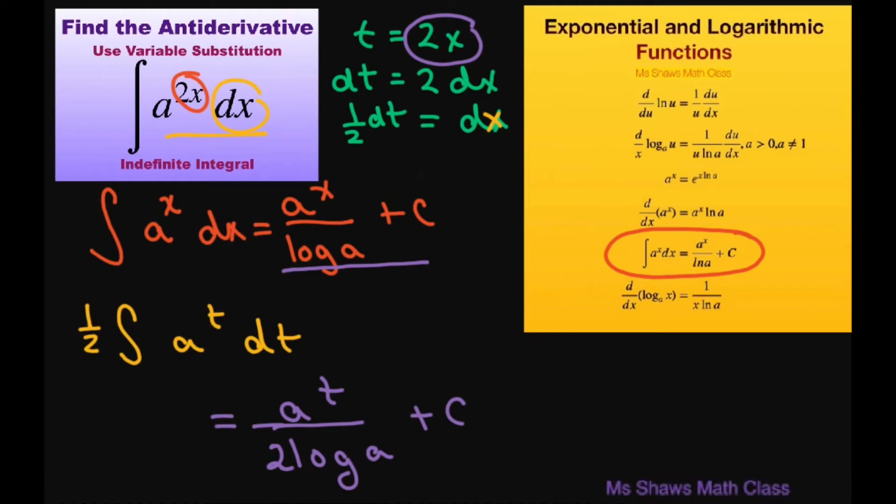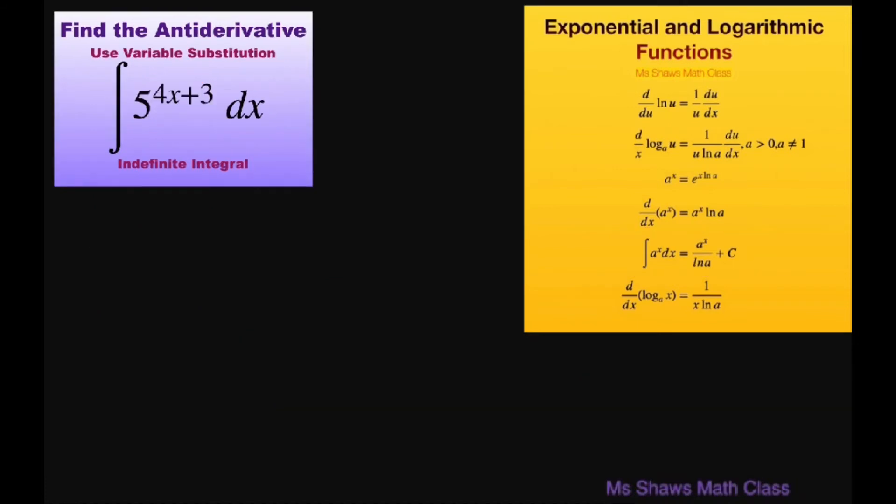And after that all we have to do is substitute back in our t, which is 2x. So our final answer is going to be a to the power of 2x divided by 2 log of a plus c. Now since this is a short video, I added another problem. So we can do the same thing.